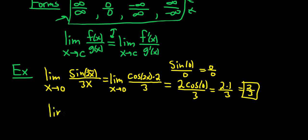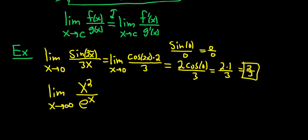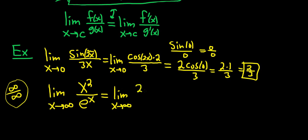Let's do another one: the limit as x approaches infinity of x² over eˣ. This one is specifically picked to show something interesting. If you were to consider plugging in infinity, both x² and eˣ approach infinity, so you have infinity over infinity — we can use L'Hopital's Rule. Taking the derivative of each piece: the derivative of x² is 2x, and the derivative of eˣ is eˣ. But we still have infinity over infinity, since 2x and eˣ both approach infinity. So you can apply L'Hopital's Rule again.